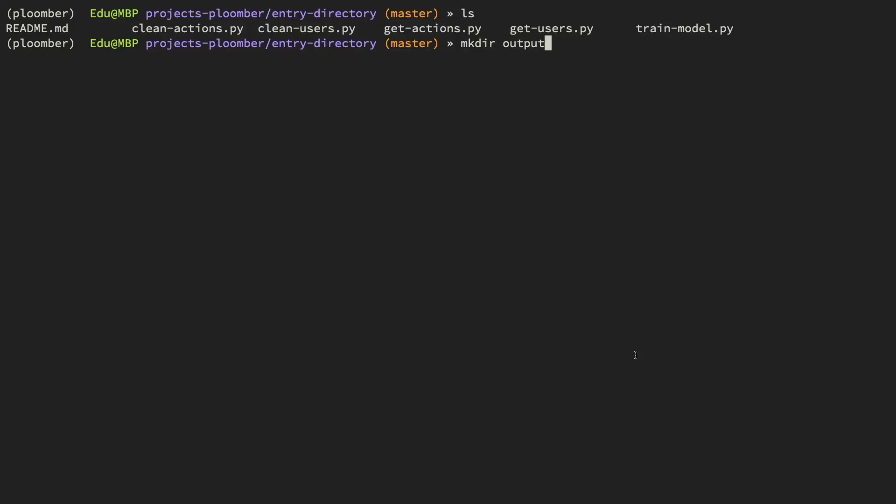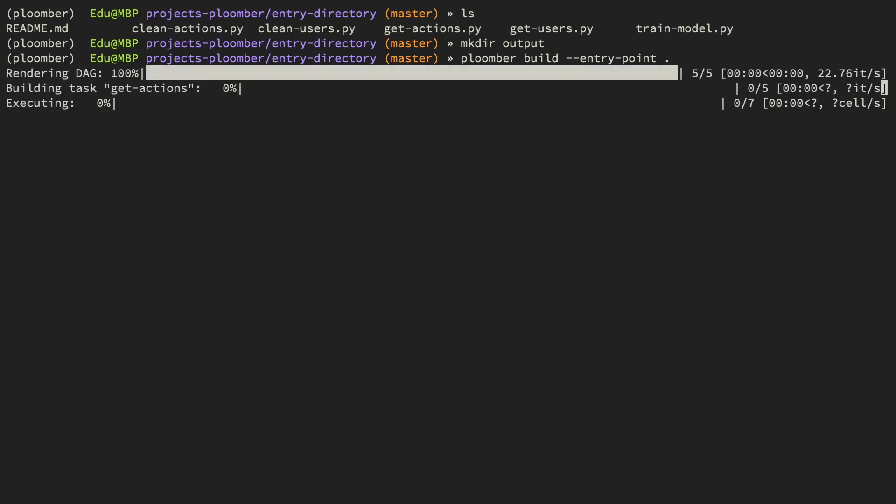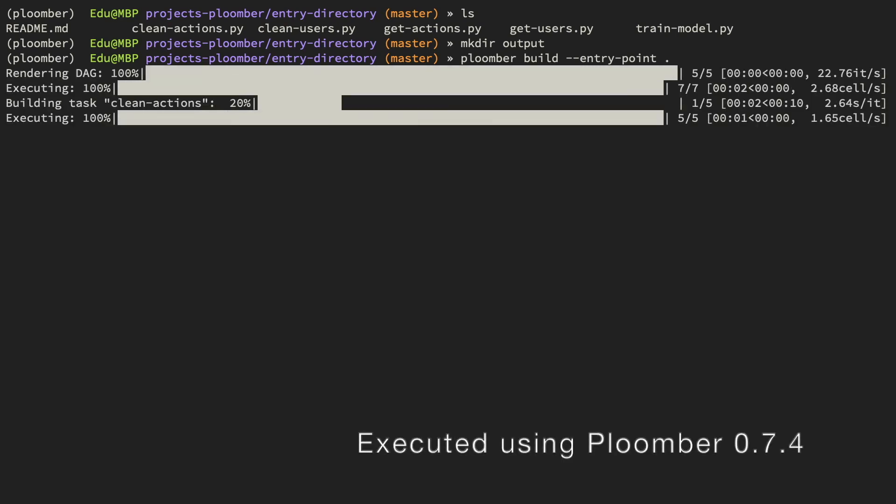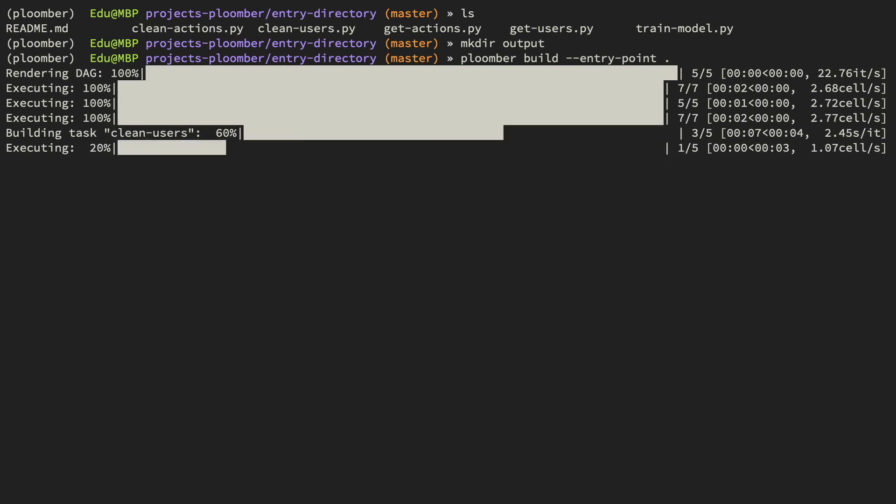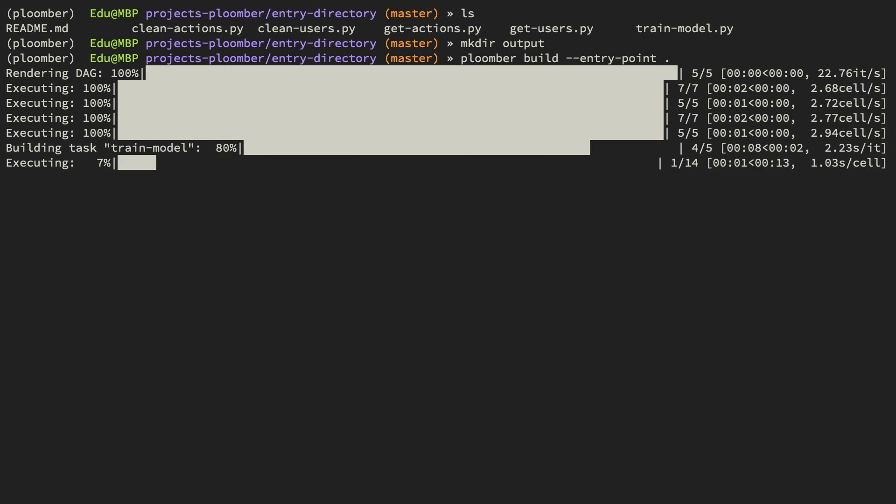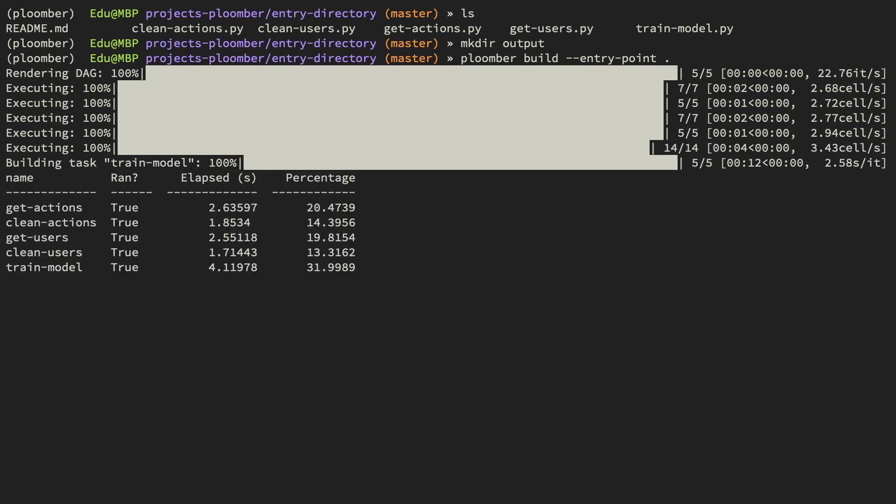Let's see a quick demo. We see the five scripts that make the pipeline that we've seen in the slides. We are going to create the output folder. Now we are going to build the pipeline. We see that it's running getActions, now cleanActions, getUsers, cleanUsers, and finally trainModel. If we run the command again, we'll see that it's going to return very quickly because we haven't changed any of the tasks. There's nothing to do.